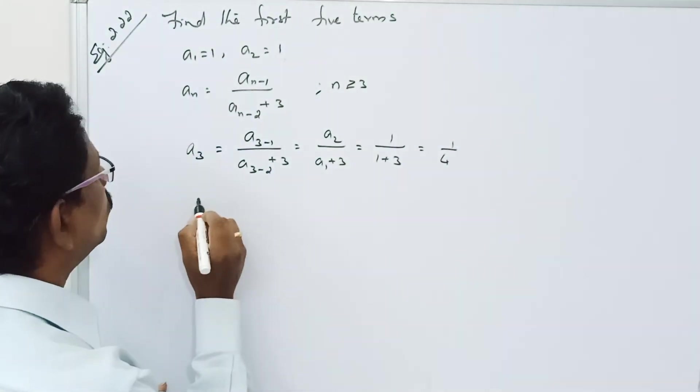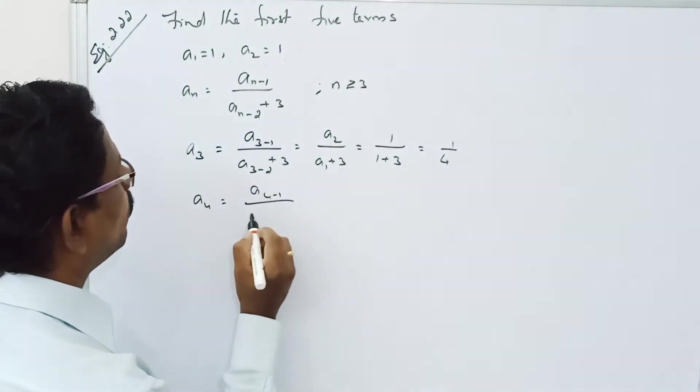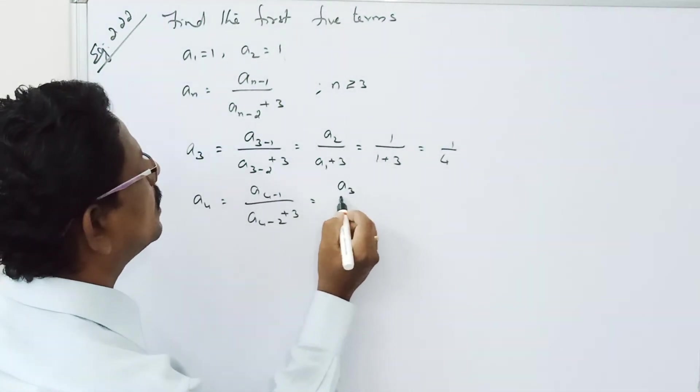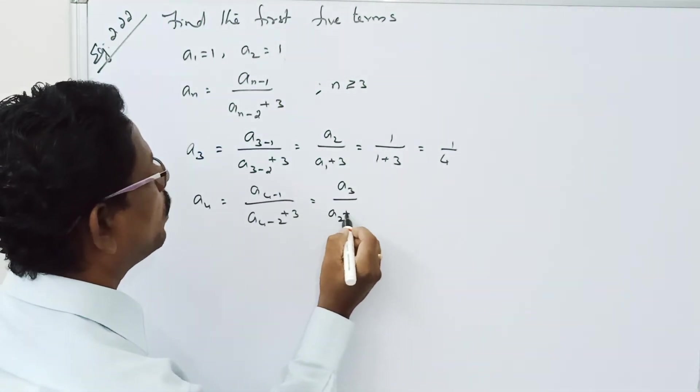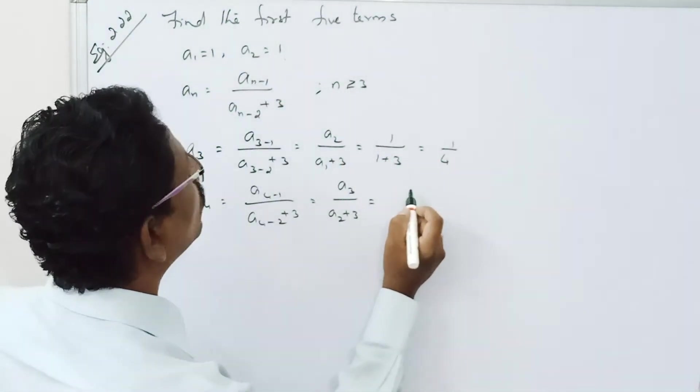Okay. Now, A4. A4 minus 1 by A4 minus 2 plus 3. That is, A3 by A2 plus 3. A3, what is A3? 1 by 4. 1 by 4.